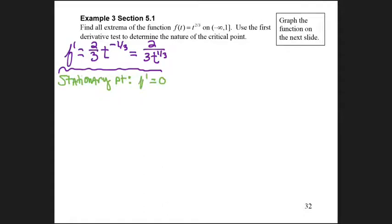First, I start by finding the stationary point where f' is set equal to 0. I set 2 over 3t^(1/3) equal to 0, but this can never equal 0 since there is no variable in the numerator.